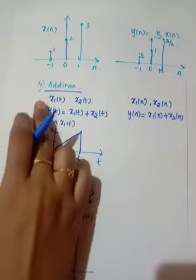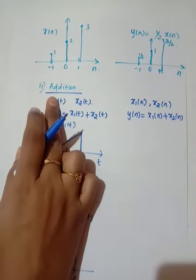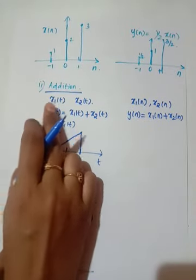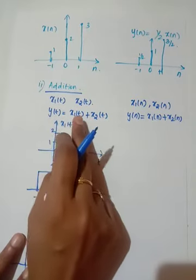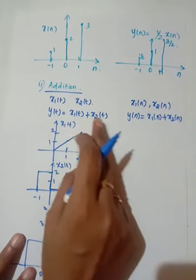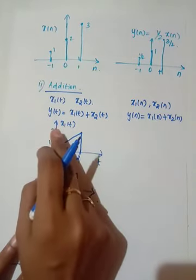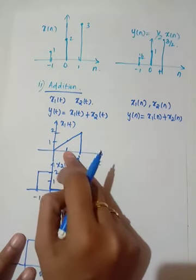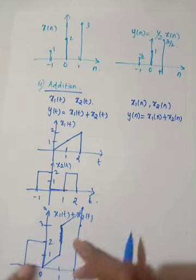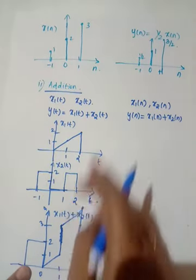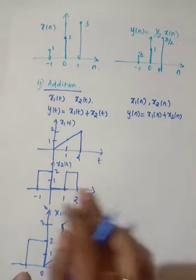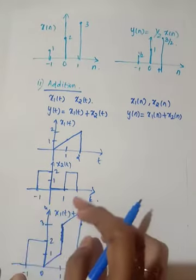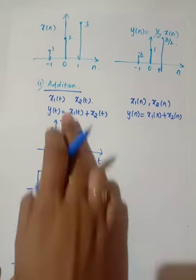Now consider the second operation: addition. Consider two signals x1(t) and x2(t), where y(t) = x1(t) + x2(t). Here we have x1(t) and x2(t), and we need to add these two signals. We have already discussed the addition of signals.